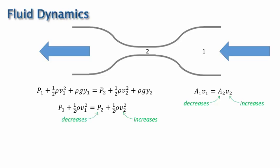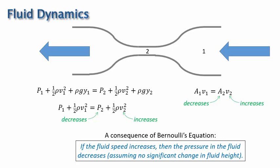This result gives us a very useful principle, that fluid pressure will decrease if the fluid speed increases, assuming that there's no significant change in fluid height. This principle is not necessarily intuitive, but it has some important applications. One such application is to provide lift on an airplane wing.